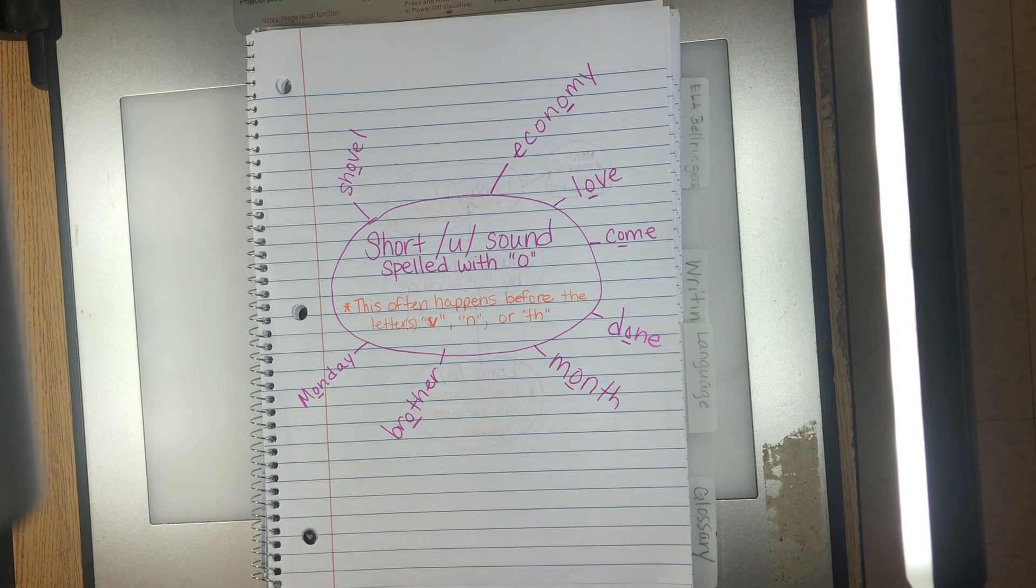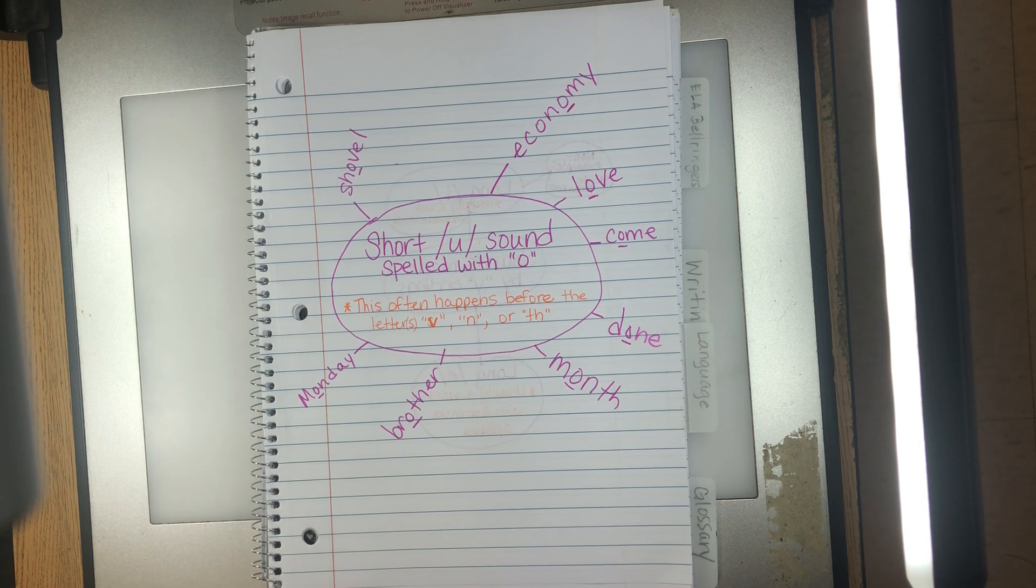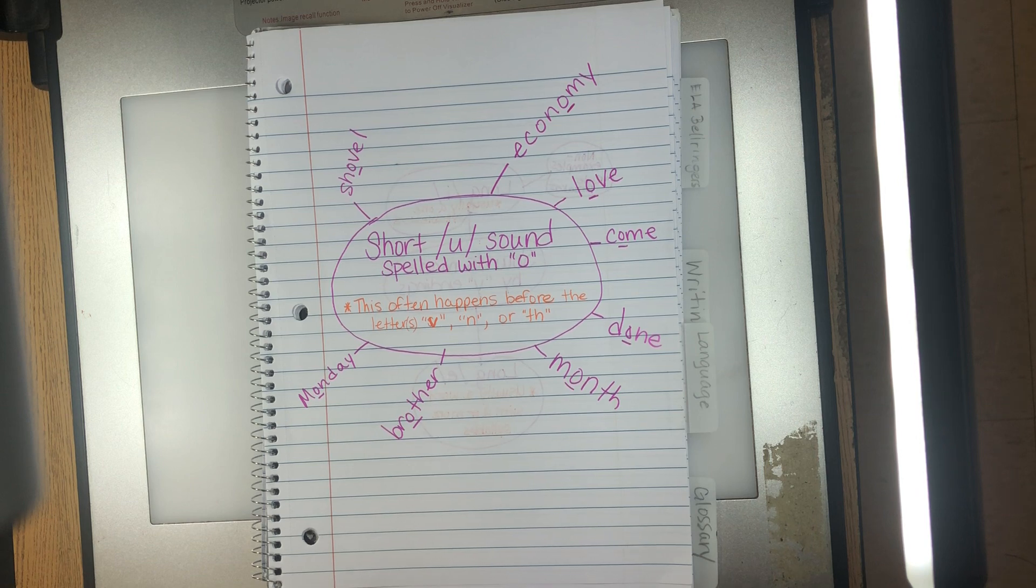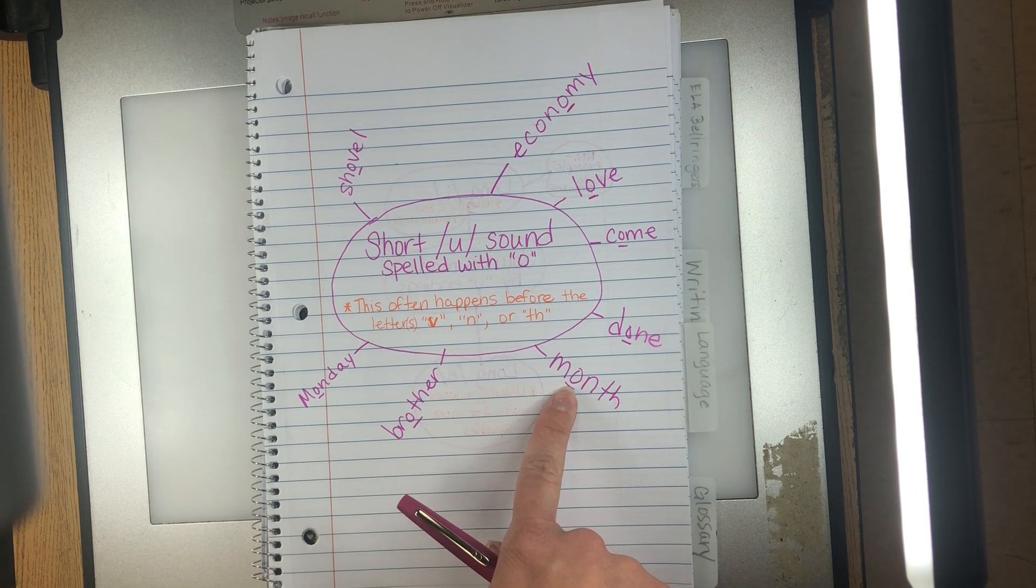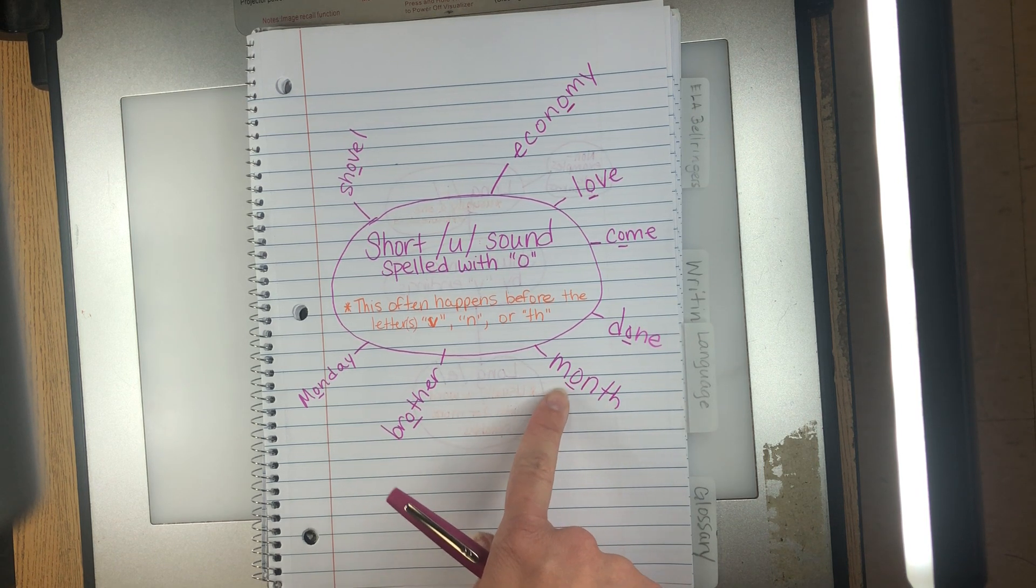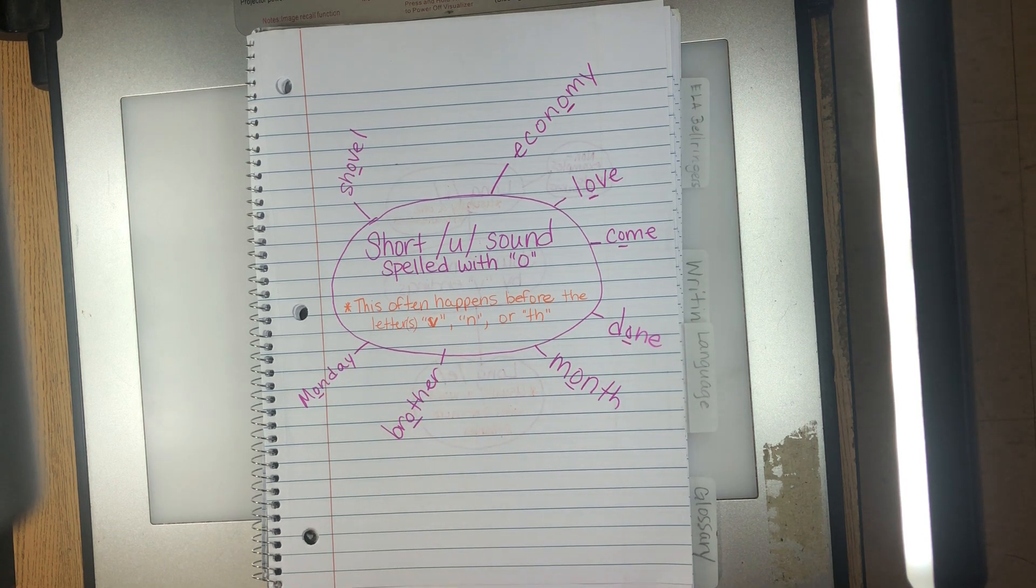What I want you to do is add more words to this. What else can you come up with? And if you're having trouble, feel free - you can look online, you can ask someone at home what other words they know that have the short U sound, but it's spelled with an O. I'd love for you - I want you to add to this list. So add some things to your list, okay?